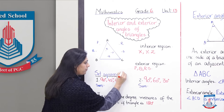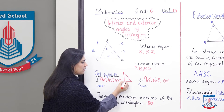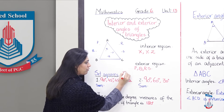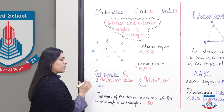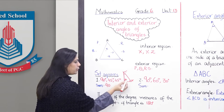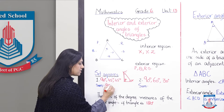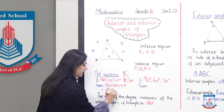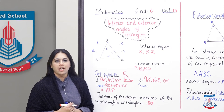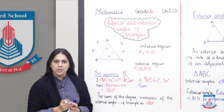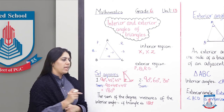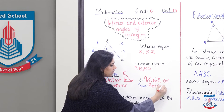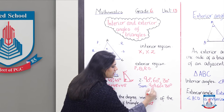If I draw a set square here, you can measure the angles: 90 degrees, 45 degrees, and 45 degrees. If you sum up these interior angles, you will get a total of 180 degrees. There is another set square in your geometry box with different measurements — the interior angles are 90, 60, and 30. If we sum them up, this also gives 180 degrees.